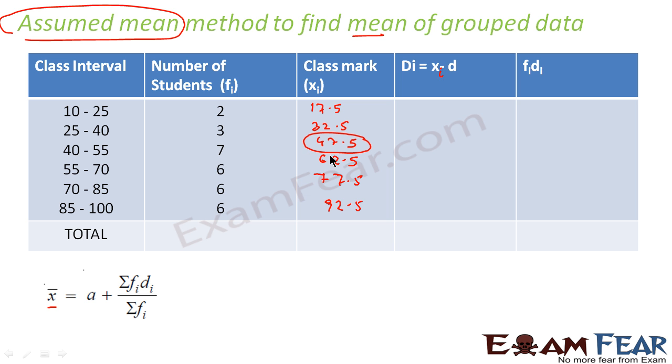So we assume that—see to me I feel this is the mean, my gut feeling may be correct maybe. I can just assume, because it starts from 17.5 and the maximum value is 92.5, and somehow I feel this is the middle value. Just my gut feeling. I can take this value also, it will come to the same answer.